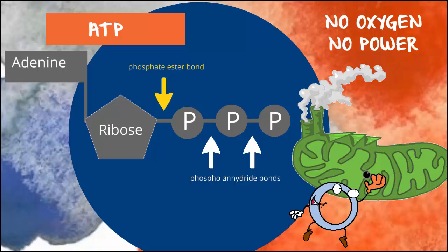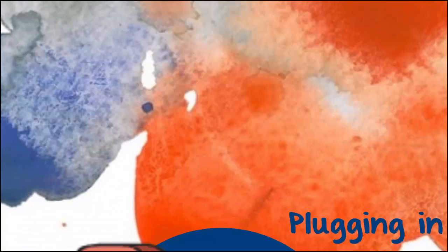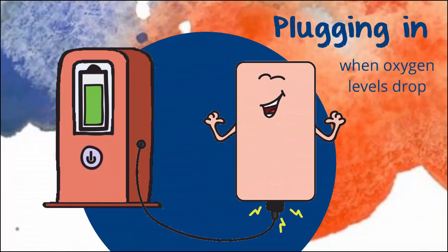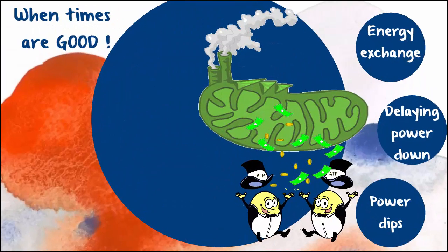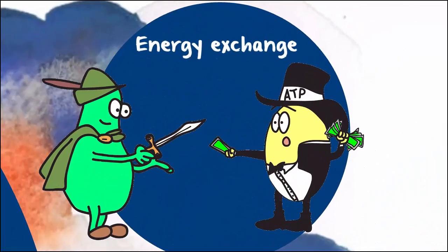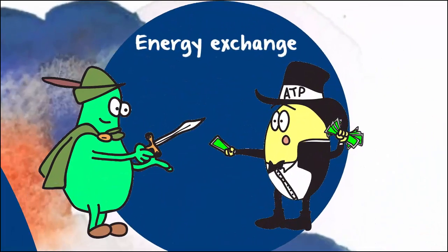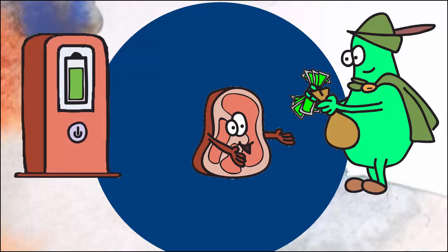If the situation persists for an extended period of time, it can lead to cell death. So cells have a backup system which kicks in when oxygen levels drop. When both oxygen and fuel are plentiful, some of the ATP that is generated is diverted. The diversion involves pulling off the high-energy phosphate bond from the ATP and sticking it onto creatine, to create phosphocreatine.